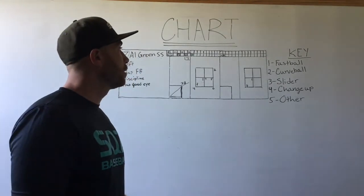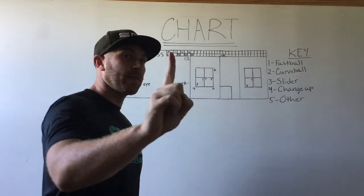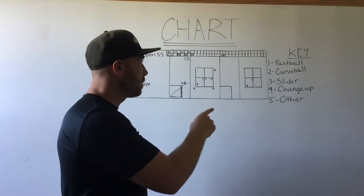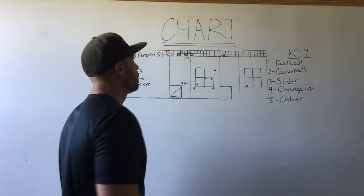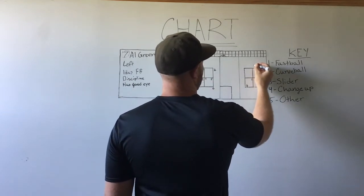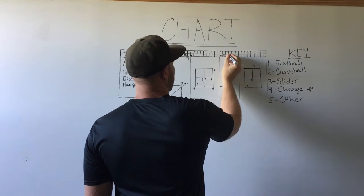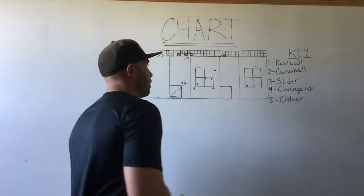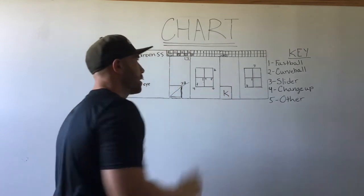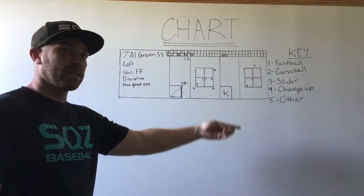We're going to beat him with a fastball up, out of the zone, because one, he likes fastballs, and two, he hasn't seen a fastball this at-bat. So let's throw him a fastball up. This is how you use the data from the first at-bat to get the hitter out in his next at-bat.